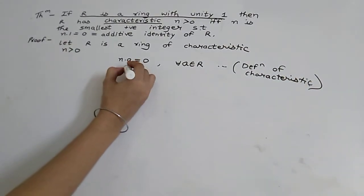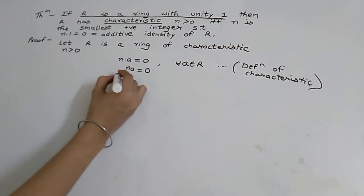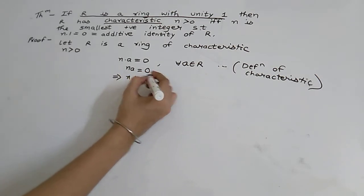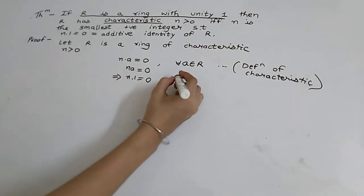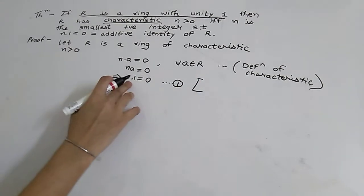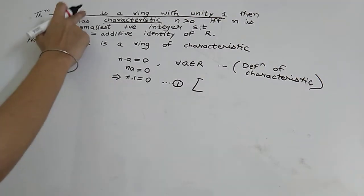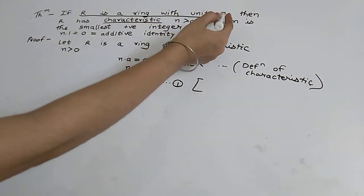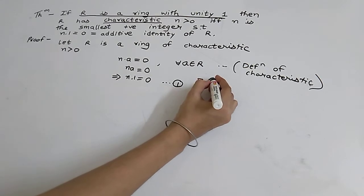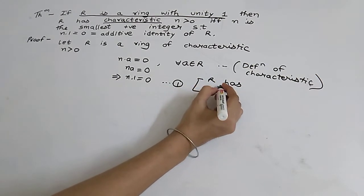So n·a = 0 implies n into 1 is equal to 0. This is equation number 1. We substituted a equals 1 because R already has a unity element which is 1. So the reason for this is: R has unity 1.